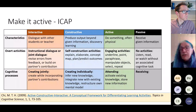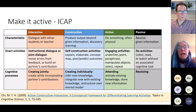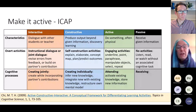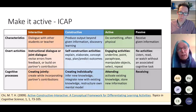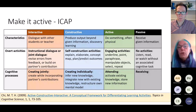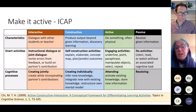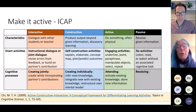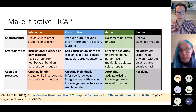How can we make sure our task is active? The framework I like is the ICAP model by Micheline Chi — she's head of a cognitive science lab. She subdivided active learning into three categories: interactive, constructive, and active. The evidence shows that where students are interacting with each other, with the teacher, or even with material, the learning gain is bigger. If they are just working alone they can still be constructing knowledge — individually or interactively with peers — which is a very powerful learning tool. If they're just doing something physical like underlining, they can still learn but the learning gain won't be as great. The idea is to push as far to the left in her table as you can.